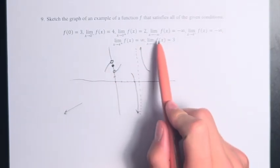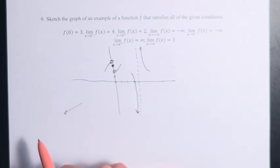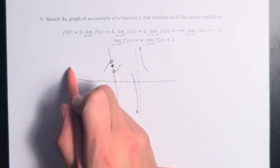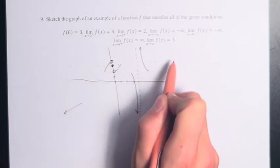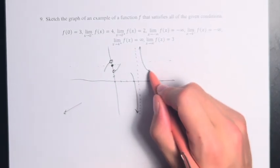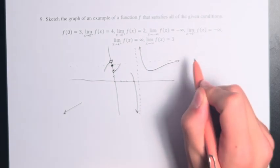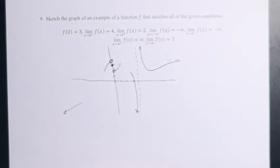Finally, as x approaches infinity, the value of the function is equal to 3. That means we have a horizontal asymptote. I'm just trying to sketch it in very lightly. Which means as x gets larger and larger, the value of the function is going to approach 3.